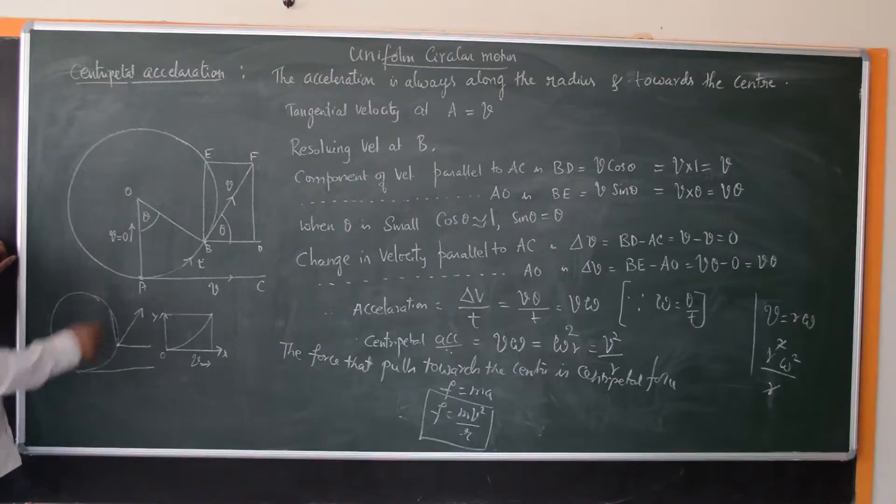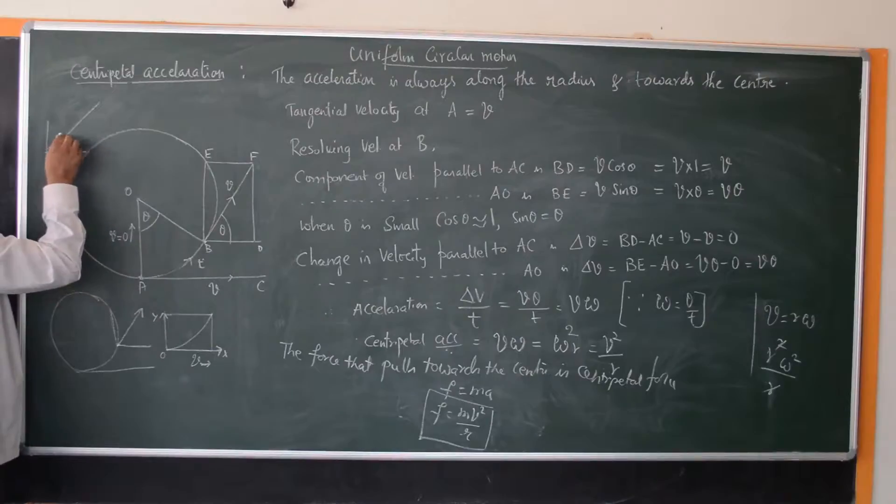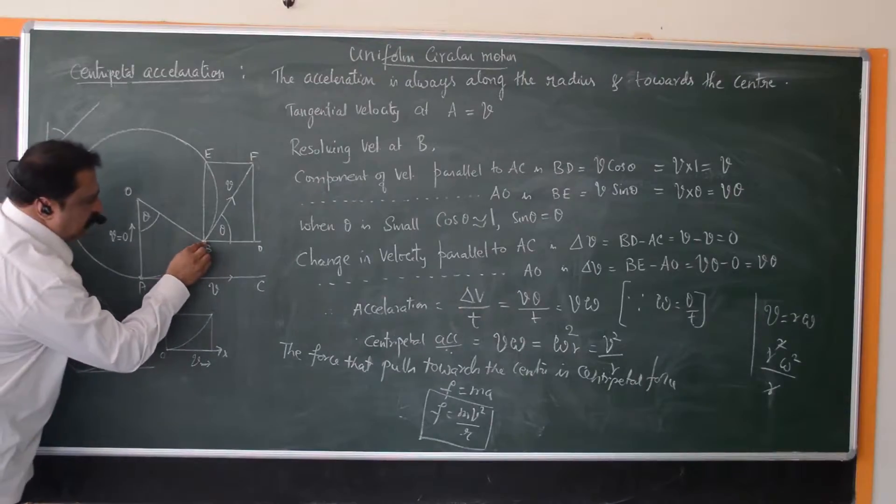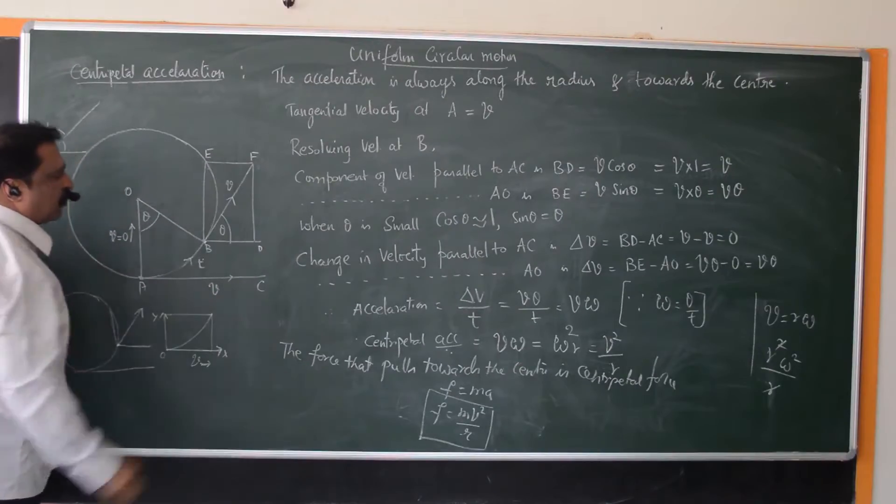Remember in physics, whenever a force or velocity, any vector acts obliquely like this, then you have to distribute the magnitude both horizontally and vertically. So resolving the velocity horizontally along BD, vertically along BE.